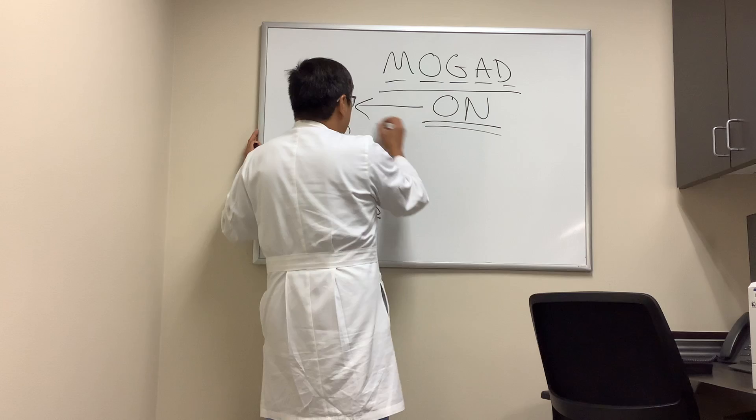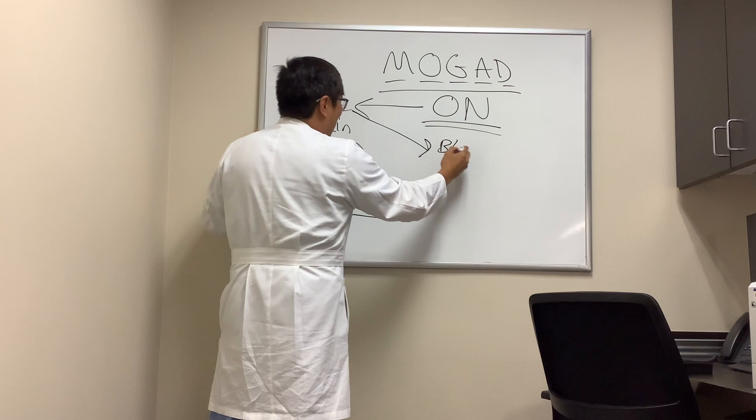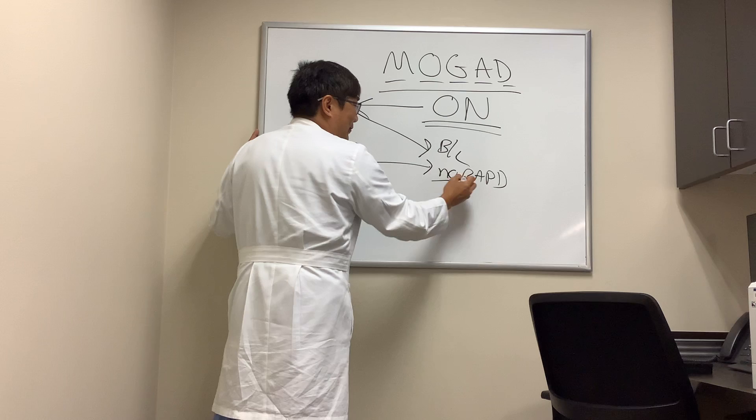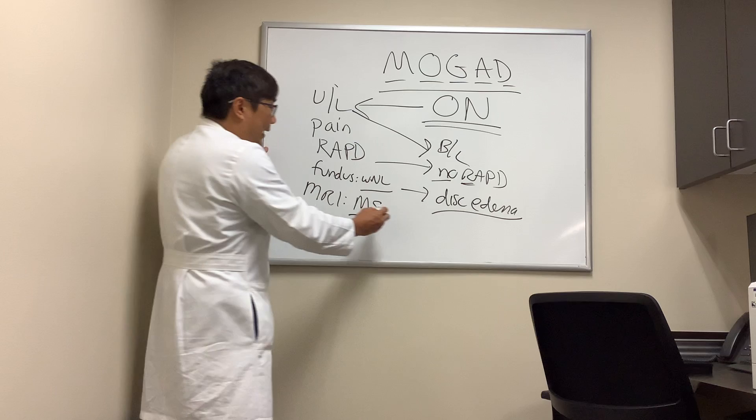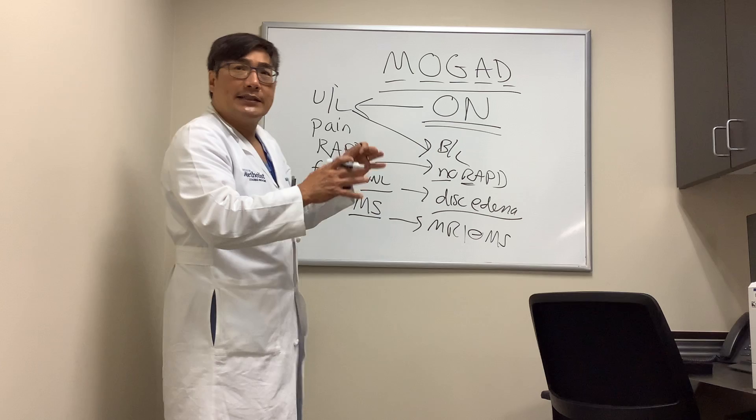However, if it doesn't look like typical MS optic neuritis, we should think about MOG. Instead of unilateral, it is bilateral. Instead of a relative afferent pupillary defect, there is no RAPD because it's actually bilateral and they cancel out relative to each other. The fundus shows disc edema rather than a normal fundus — the doctor sees something — and the MRI scan does not show multiple sclerosis white matter lesions.